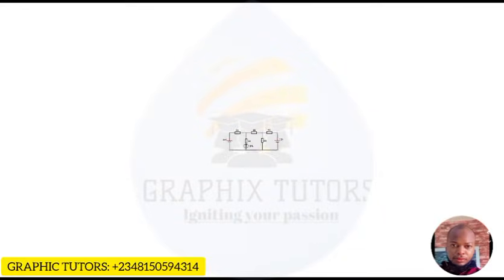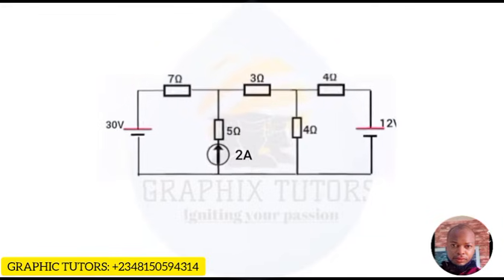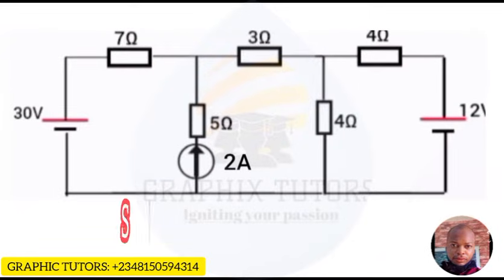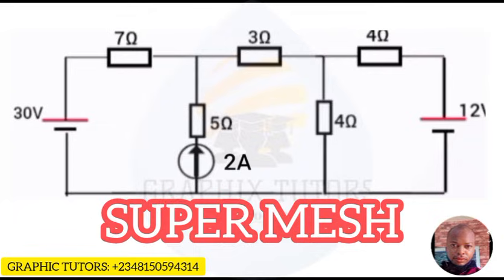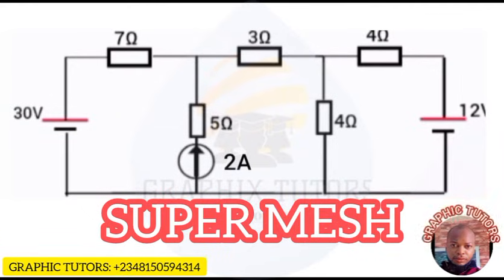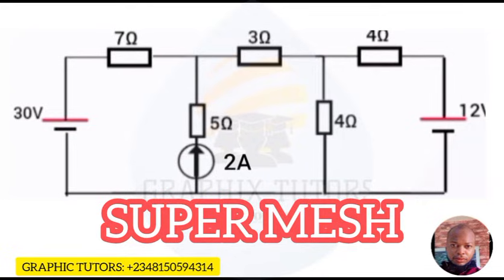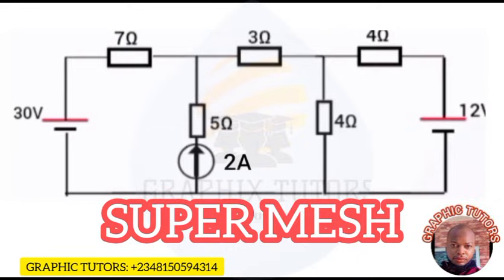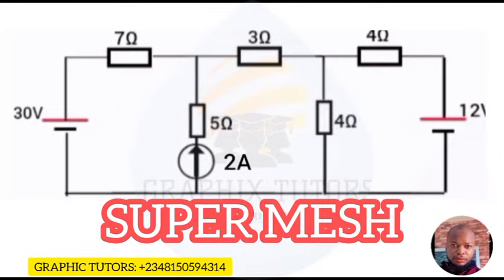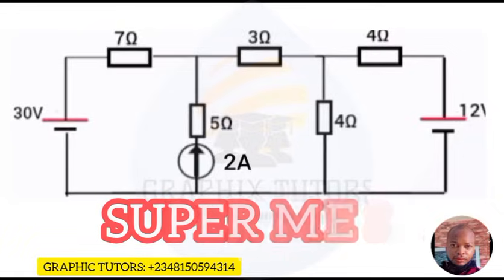My name is Graphics. If you look at the front of the screen you will see a circuit, and we are told to use super mesh to analyze this circuit. The circuit has elements — five passive and three active. The passive elements are the resistors, which consume and distribute energy, with resistances of 7 ohms, 5 ohms, 3 ohms, 4 ohms, and 4 ohms. The active elements give out energy: two voltage sources of 30 volts and 12 volts, and an independent current source of 2 amperes.